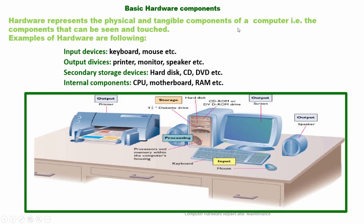Hardware represents the physical and tangible components of a computer — the components that can be seen and touched. Examples of hardware are input devices like the keyboard and mouse, output devices like printers, monitors and speakers, secondary storage devices like a hard drive, CD-ROM, and flash drive, and internal components inside the computer like the motherboard, CPU, and RAM.